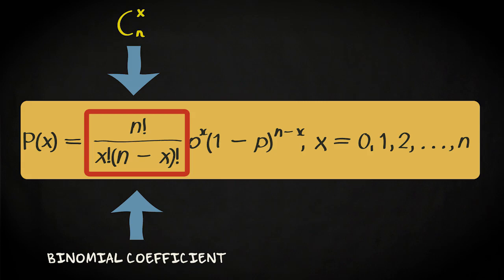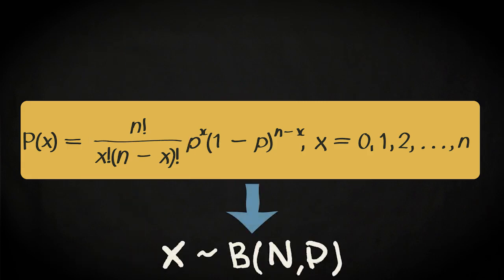The shorthand for the entire formula is this, which says x is a binomial random variable with n trials and success probability p.